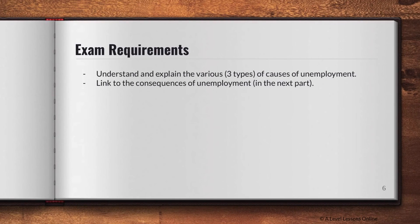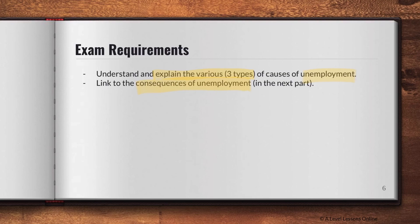For exam requirements, you need to understand and explain the various types of unemployment. Demand-deficient unemployment is caused by AD factors; structural unemployment is caused by a skills mismatch; and frictional unemployment occurs all the time due to the time lag when transitioning between jobs. You should also be able to link them to the consequences of unemployment if required. These are very simple to master — they can appear as a 10-mark question in essays or case studies.